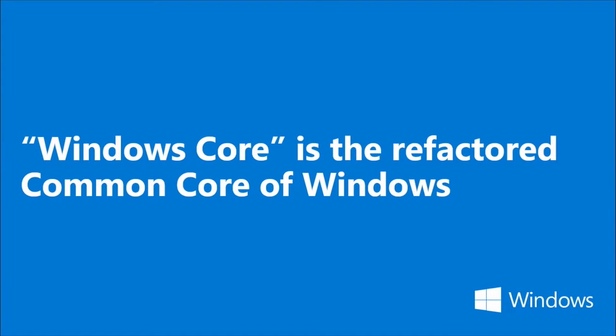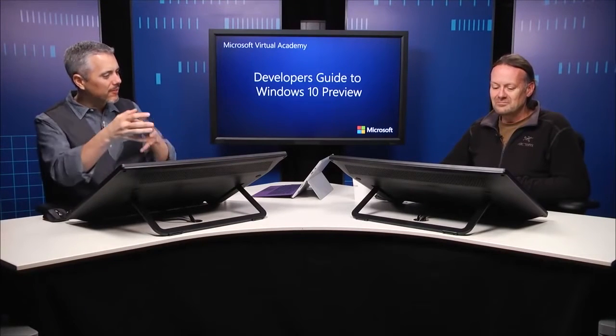When it all boils down to it, this is a new version of Windows, and Windows 10 really has at its core, Windows Core. Windows Core is this common set of APIs and common infrastructure which gives us, for the first time really, a true binary compatibility across all our different platforms. Windows Core has been a long time coming.